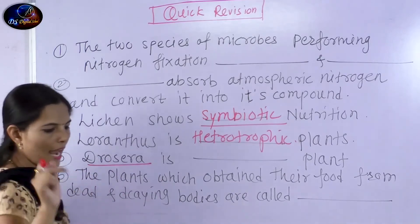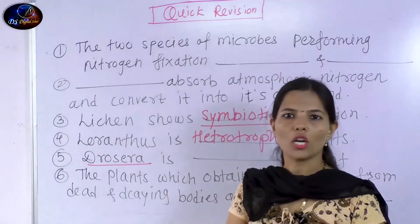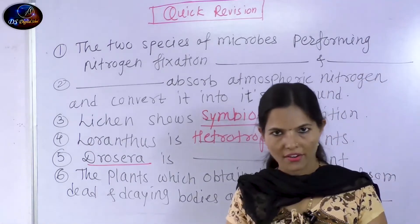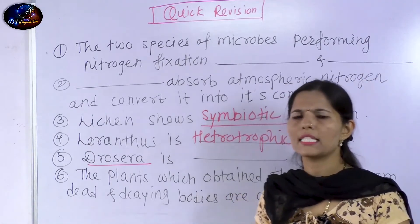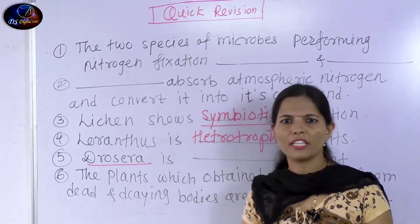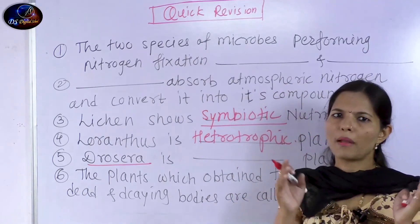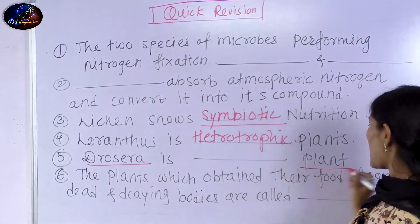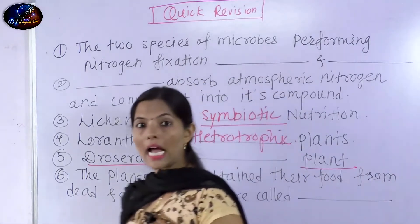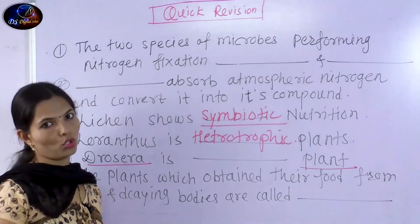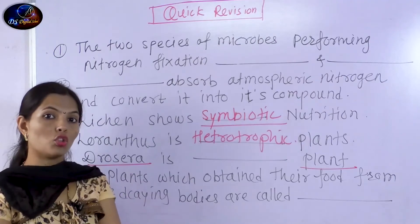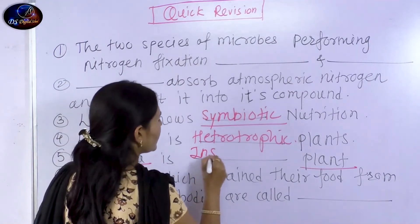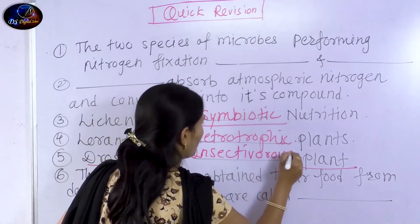Next one is Drosera. Drosera is an insectivorous plant. Insectivorous plants are very interesting — like the pitcher plant and Venus flytrap. Drosera is an insectivorous plant that gets nitrogen from insects.